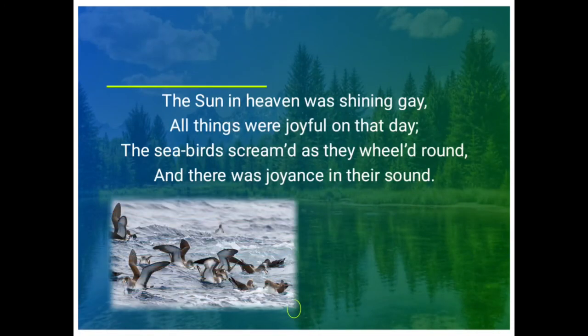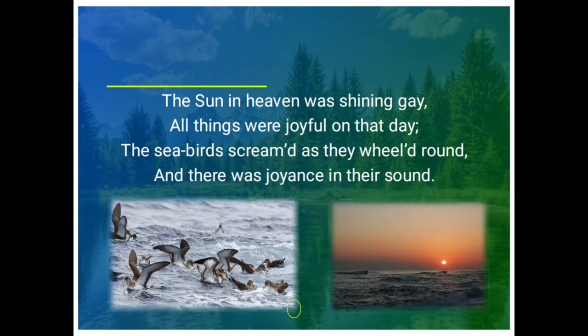In the fifth stanza, the poet describes the jubilant weather. 'The sun in heaven was shining gay. All things were joyful on that day. The sea birds screamed as they wheeled round, and there was joyousness in their sound.' It was a bright, sunny day. Everything in nature seemed mirthful on that day. The sea birds were screaming while flying around, and the sounds they created were filled with joy. The poet uses symbolism and personification here — heaven is a symbol of sky, and the sun is described as gay, meaning happy.